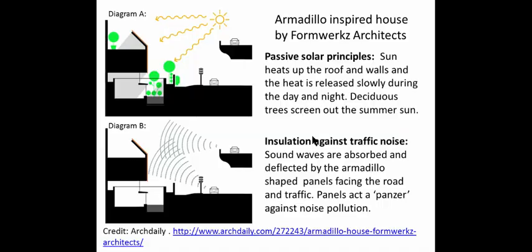We're going to look at a diagram for passive solar design, where the sun heats the building and heats up the panels and the heat gets transferred to the inside. We'll also look at Diagram B, where you'll see the cars and traffic noise pollution traveling towards the building and where it is screened.